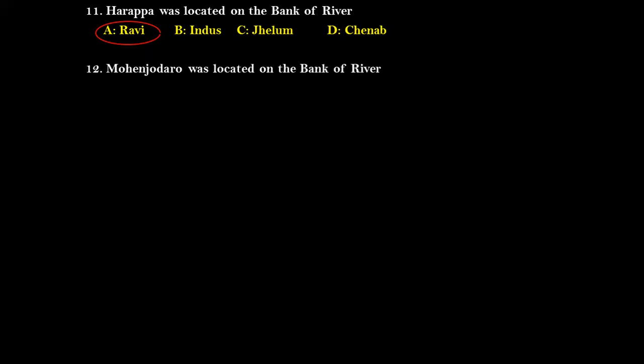Question twelve: Mohenjo-Daro was located on the bank of which river? Options are Ravi, Indus, Jhelum, and Chenab. The right answer is river Indus, because Mohenjo-Daro was located on the mainstream of river Indus, on the southern part of Harappa.